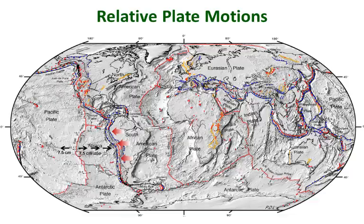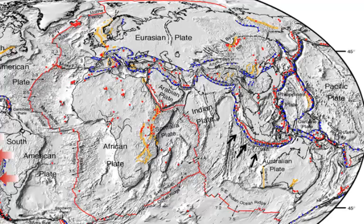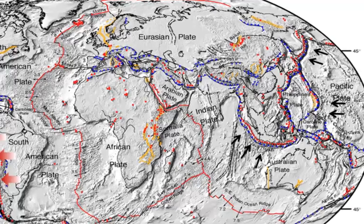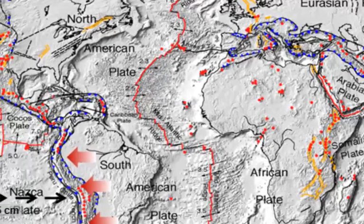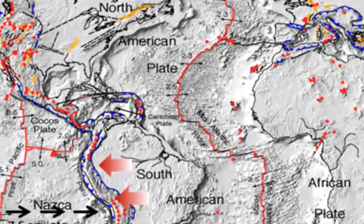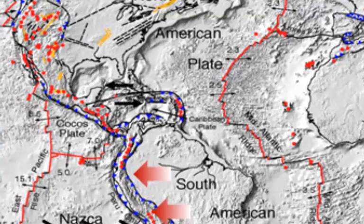We see the same thing in the Indian Ocean, where the Indian-Australian plate migrates toward the Java Trench, and in the western Pacific Ocean, where the Pacific Plate is consumed below the Kuril and Mariana Trenches. Elsewhere, relative plate motions are essentially parallel to portions of plate boundaries defined by transform faults. We see examples of this along the margins of the smaller Caribbean plate, along transformed segments in ocean ridges, and along the San Andreas Fault separating the North American and Pacific plates.